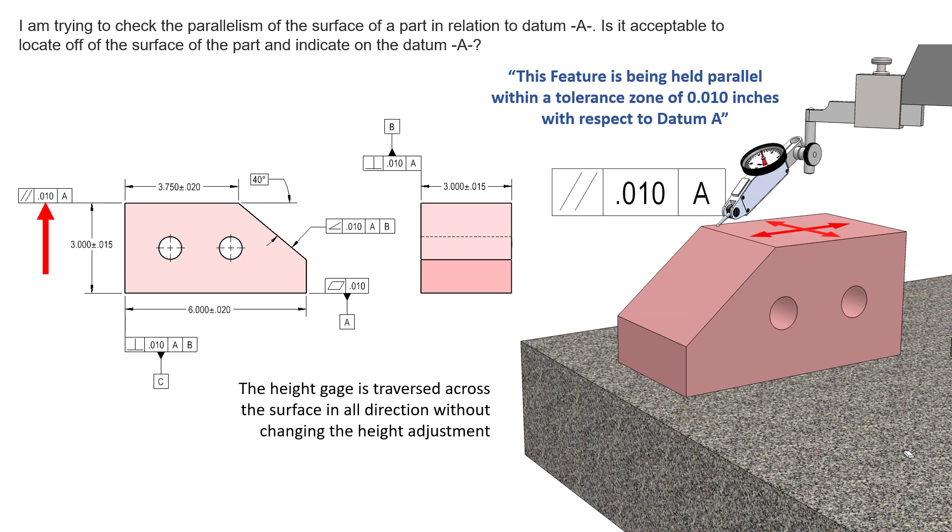So the question was: can I reverse that and put this surface on the granite table and then indicate off of this surface and check parallelism this way? And the short answer is no. And I'll show you why with a couple of examples.